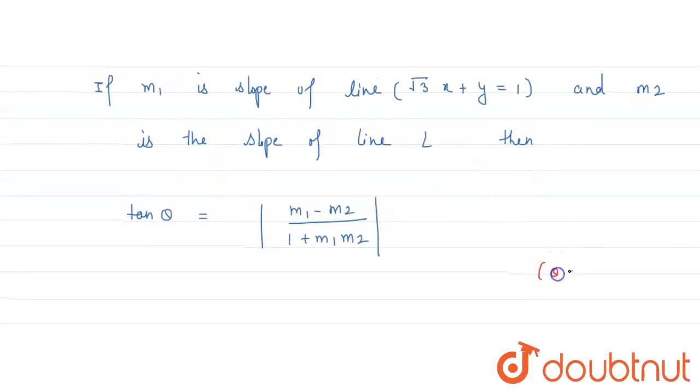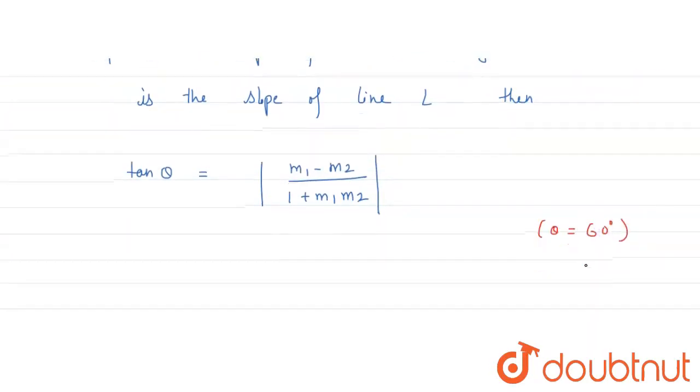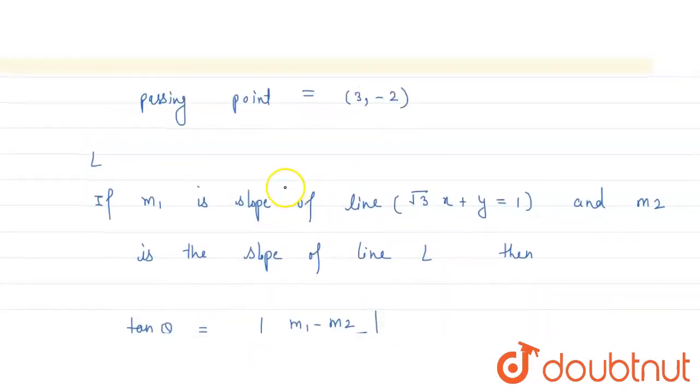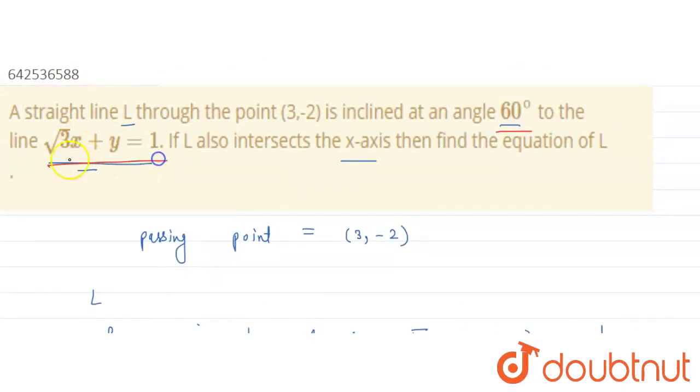We know that θ is 60 degrees. So we can say tan 60 degrees equals, what is m1? m1 is the slope of this line.